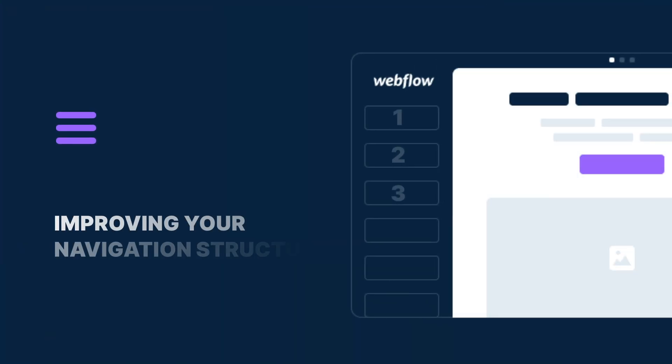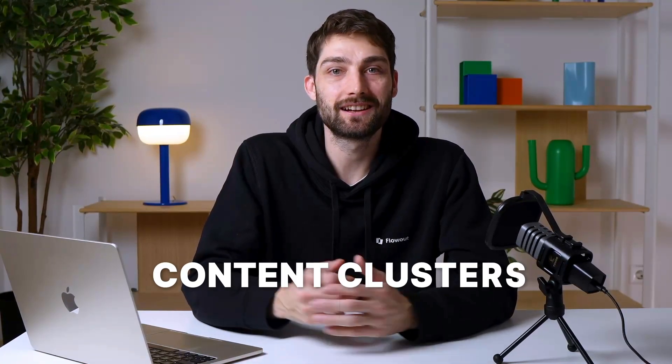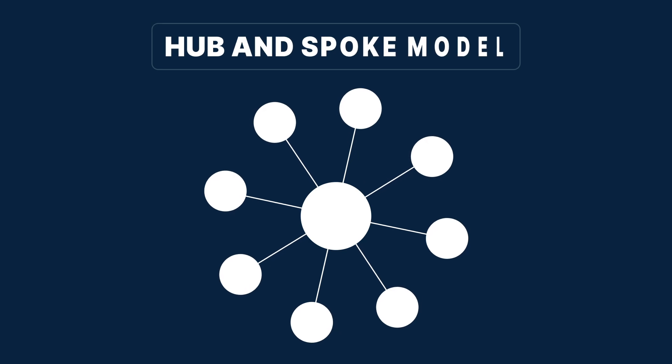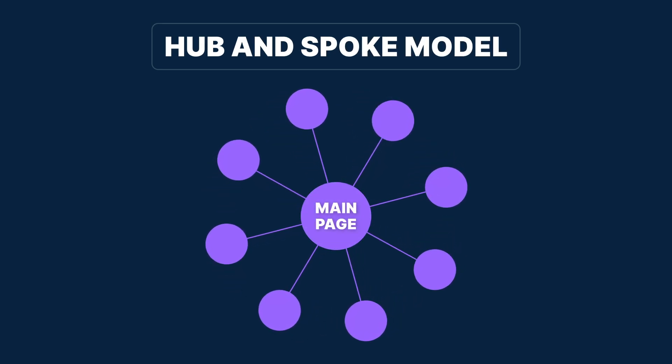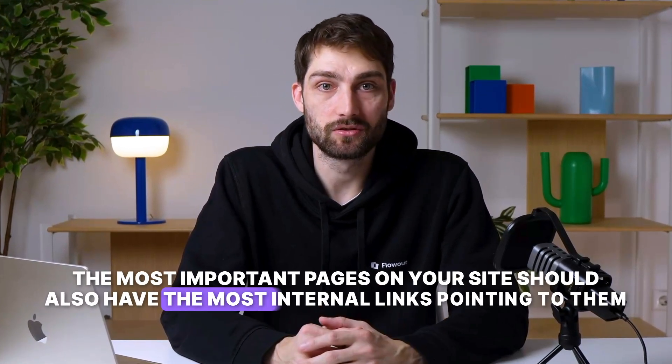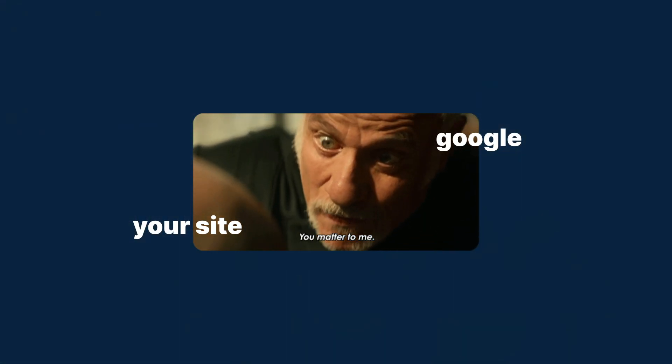That's why the third step is improving your navigation structure. Google ranks sites that provide a clear and logical user experience. Your navigation should be structured in a way that groups related content together. Use content clusters to organize related content and improve SEO. For example, if you have multiple pages about Webflow SEO, group them under a main pillar page that links to all related sub-topics. This tells Google that your site has a structured hierarchy, helping search engines understand your expertise in the topic. Implement this by creating a hub-and-spoke model where your main page links out to detailed supporting content, and those pages link back to the main pillar page. This strategy boosts rankings for both individual pages and the overall site. The most important pages should have the most internal links pointing to them, telling Google they matter more than others.